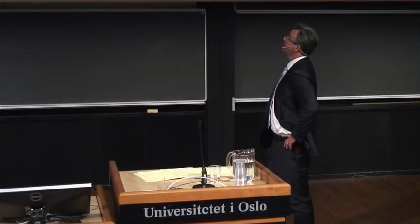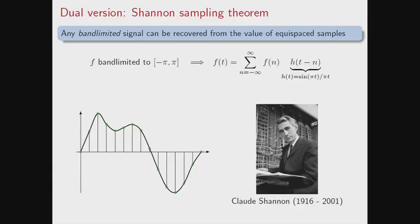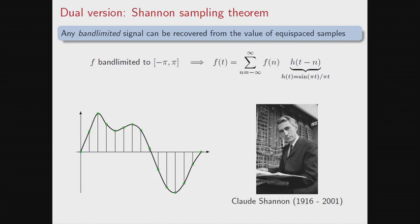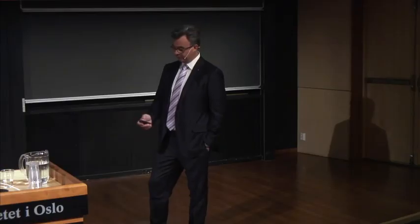Fourier analysis has a dual version: Shannon's sampling theorem, which says that essentially any band-limited signal can be sampled without any information loss from regular intervals. If I just know the values of the signal on an equispaced grid, then I know the signal everywhere. This principle is the backbone of digital signal processing — we would not have digital signal processing without this theorem. It's the same as saying that the trigonometric system is complete.